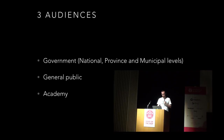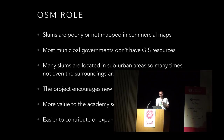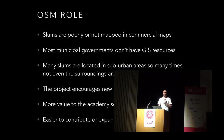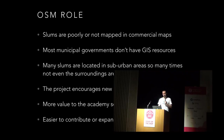The role of OSM is that slums are usually not mapped in commercial maps like Google Maps, so OSM becomes very relevant. Most governments don't have GIS resources, so the index is helpful — for example, if they have to decide where to put a new school, they can use all this information to know which location would benefit the most people. Many slums are located in places where not even the surroundings are well mapped, making it hard to understand the context of these families.